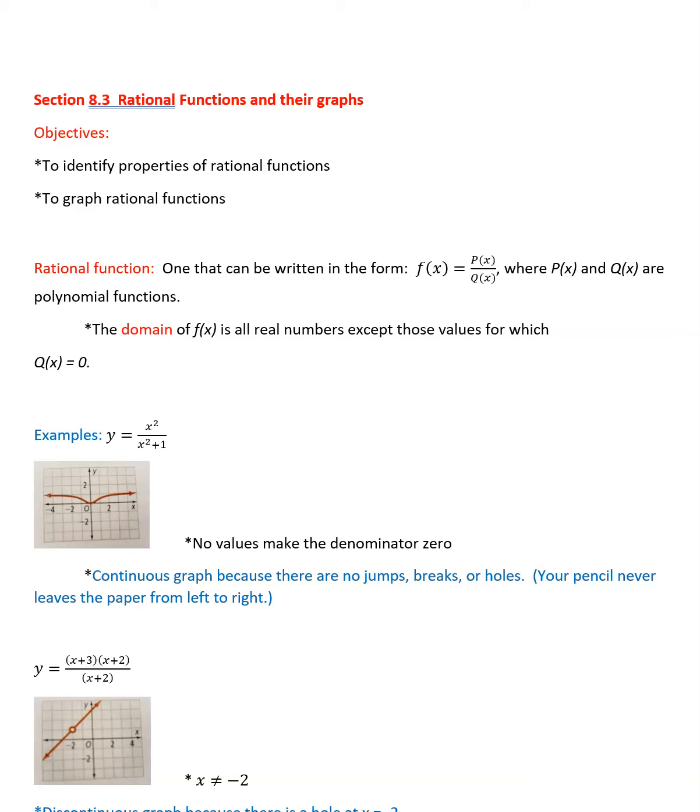Rational functions are functions that can be written in the form f(x) = p(x)/q(x), which basically means you can write it as a fraction. p(x) and q(x) are polynomial functions, like x² + 7 or x − 1.